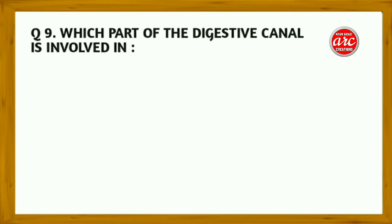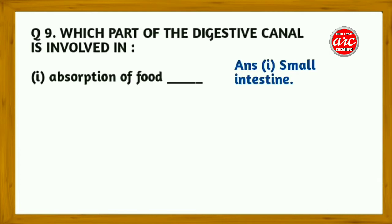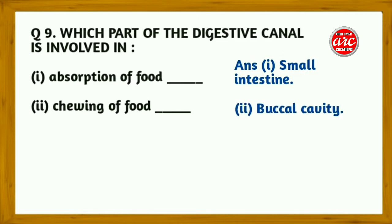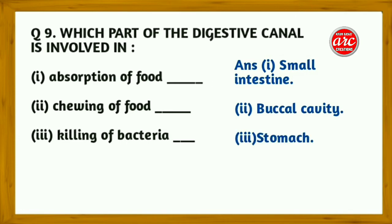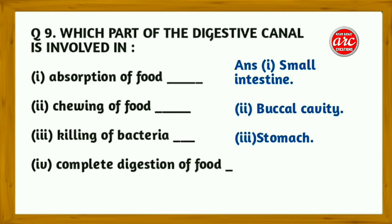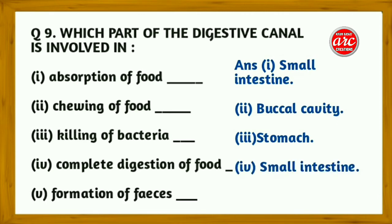Question 9: Which part of the digestive canal is involved in — (1) absorption of food: small intestine; (2) chewing of food: buccal cavity; (3) killing of bacteria: stomach; (4) complete digestion of food: small intestine; (5) formation of feces: large intestine.